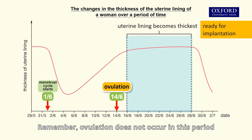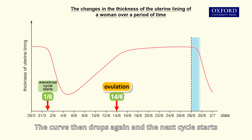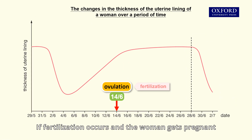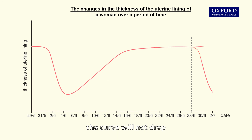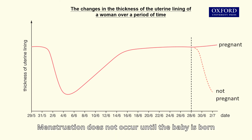Remember, ovulation does not occur in this period. The curve then drops again and the next cycle starts. If fertilization occurs and the woman gets pregnant, the curve will not drop. Menstruation does not occur until the baby is born.